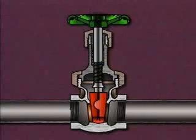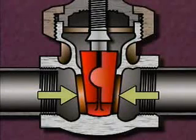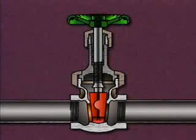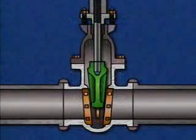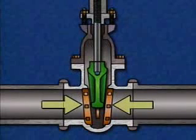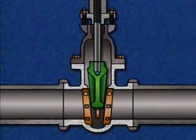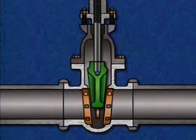Small gate valves generally have fixed seats that are cast as part of the valve body. It's more economical just to replace these valves than to repair them when they're worn or damaged. Large gate valves, however, frequently have replaceable seats. With these types of valves, it's less expensive to replace the seat than the entire valve.